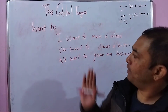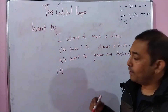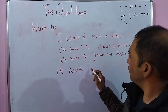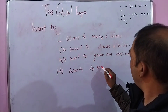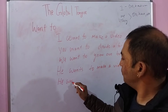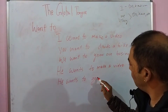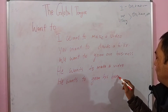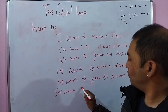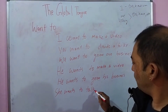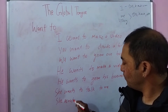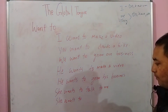Let's say 'he' — here sometimes people get confused whether to use 'want' or 'wants.' So it should be: 'He wants to make a video,' 'He wants to grow his business,' 'She wants to talk to me,' or 'She wants to eat pizza.'